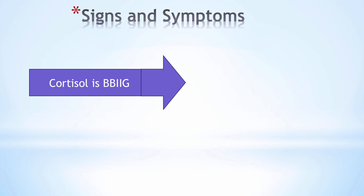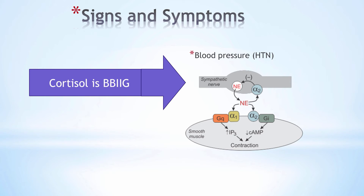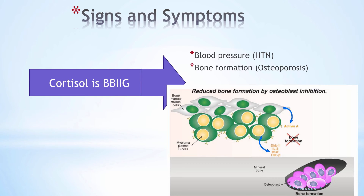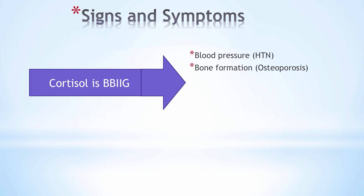Before delving into the effects of hypercortisolism, let's look at what cortisol normally does, using the mnemonic BIG. First, blood pressure: cortisol increases it through upregulation of alpha-1 adrenergic receptors on arterioles, making them more sensitive to epinephrine and norepinephrine, which can eventually lead to hypertension. Cortisol also has a negative effect on bone formation through its inhibitory effect on osteoblastic activity, leading to osteoporosis.